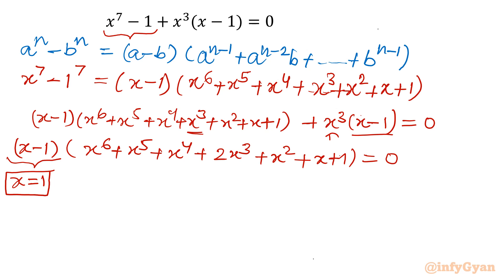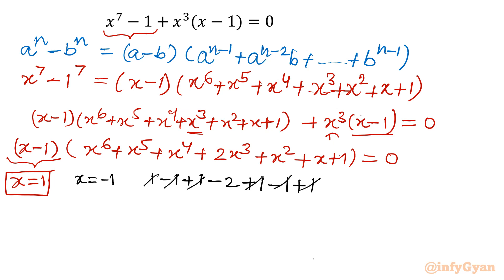So let me try x equal to minus 1. If I put x equal to minus 1, then it would be 1 minus 1 plus 1 minus 2 plus 1 minus 1 plus 1. You can see it cancels out completely, coming out 0. That means x equal to minus 1 is the solution of this hexic equation, so x plus 1 is one factor.